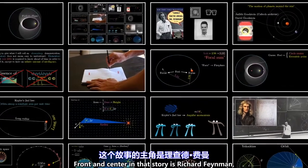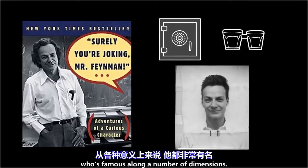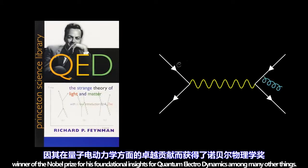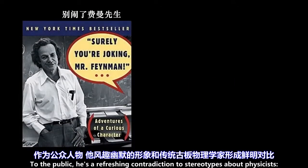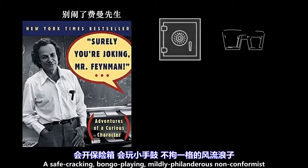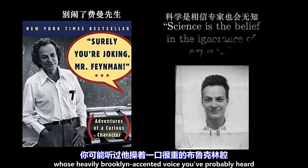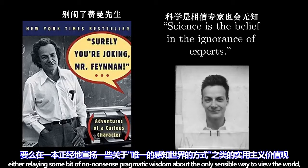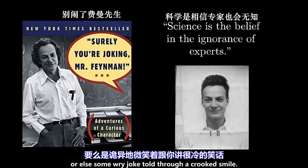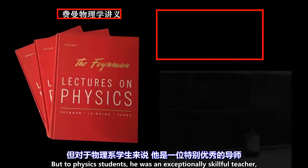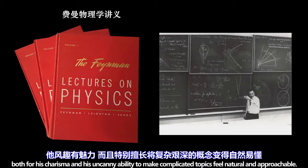Front and center of that story is Richard Feynman, who's famous in a number of dimensions. To scientists, he's a giant of 20th century physics, winner of the Nobel Prize for his foundational insights in quantum electrodynamics, among many other things. To the public, he's a refreshing contradiction to the stereotypes about physicists — a safe-cracking, bongo-playing, mildly philanderous nonconformist whose heavily Brooklyn-accented voice you've probably heard relaying some bit of no-nonsense pragmatic wisdom, or else some wry joke told through a crooked smile. But to physics students, he was an exceptionally skillful teacher, both for his charisma and his uncanny ability to make complicated topics feel natural and approachable.